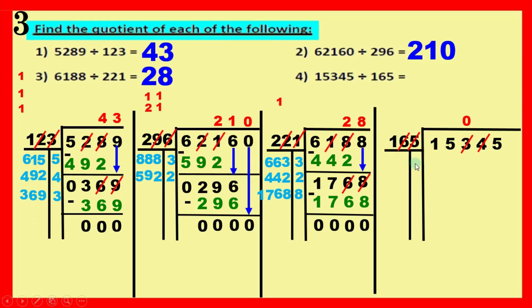We can't try fifteen in the margin — the largest number we try is nine. Try nine: nine times five equals forty-five, write five and carry four; nine times six equals fifty-four, fifty-four and four equals fifty-eight, write eight and carry five; nine times one equals nine, nine and five equals fourteen — giving one thousand four hundred and eighty-five. We have one thousand five hundred and thirty-four which is more, so nine works.